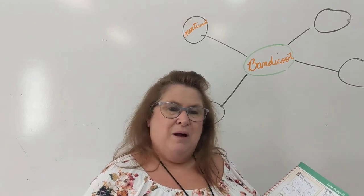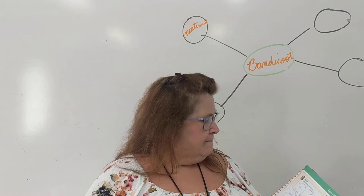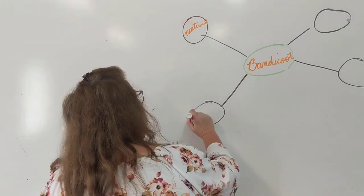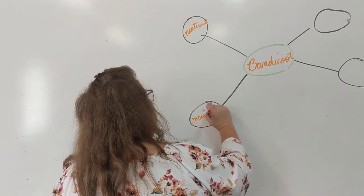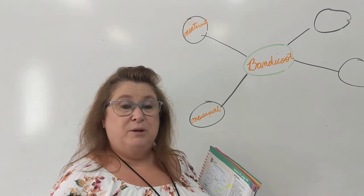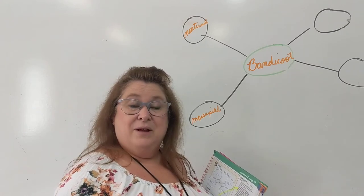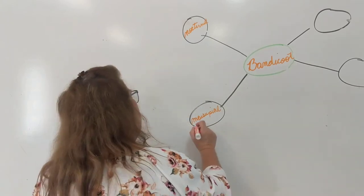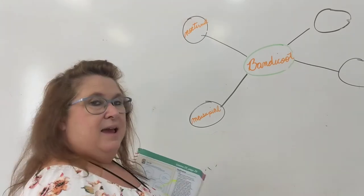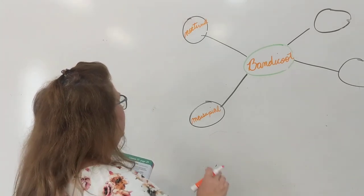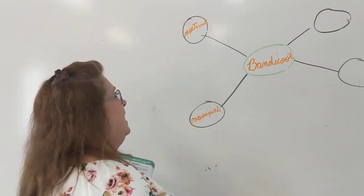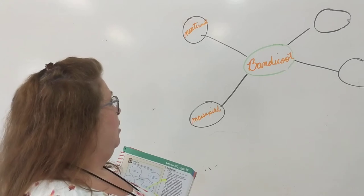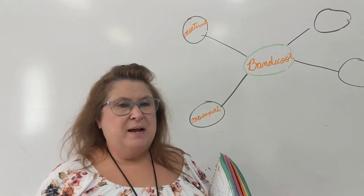Another detail about a bandicoot — they are a marsupial. A bandicoot is a marsupial. Fifth graders are learning what marsupials are now. Do any of you know what a marsupial is? They carry their babies in a pouch in their stomach, like a kangaroo or an opossum. So 'marsupial' is spelled M-A-R-S-U-P-I-A-L. And if you go back to nocturnal, check your spelling: N-O-C-T-U-R-N-A-L.